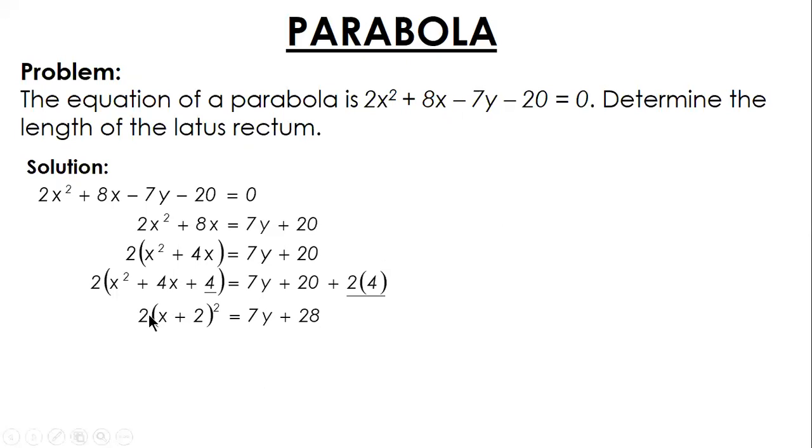And finally, for standard form, there should be no factor or real numerical coefficient. Before that, factor out the 7. And then divide by 2. So this is now the standard equation of the parabola.